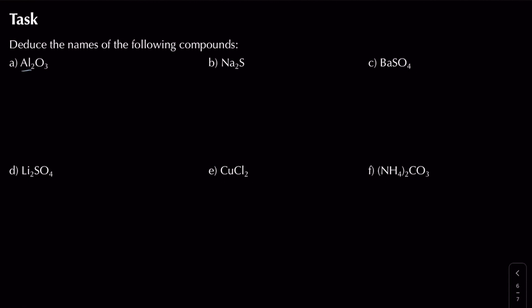Now working in reverse - naming compounds from formulae. First: aluminium and oxygen on its own, no other atoms attached. The metal comes first, the non-metal last, so it's aluminium oxide. Next: sodium with sulphur only, no oxygen, so it ends in '-ide' - sodium sulphide.